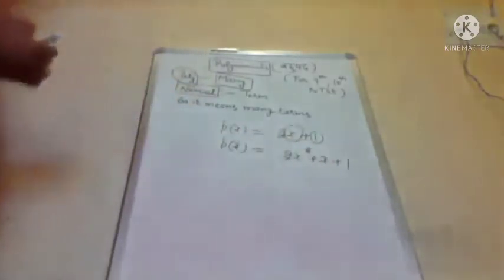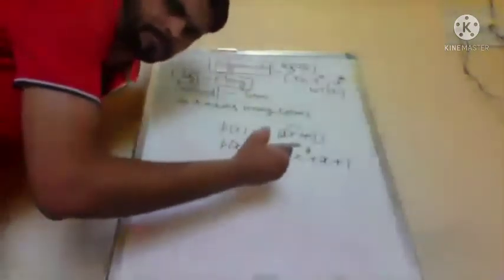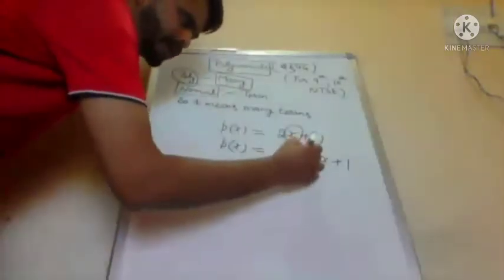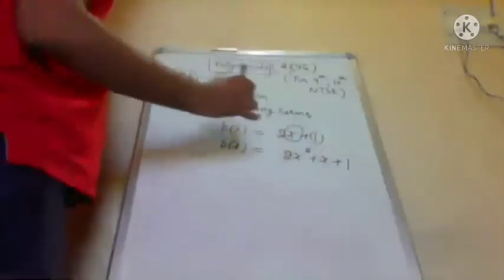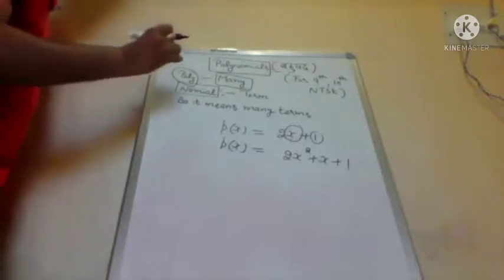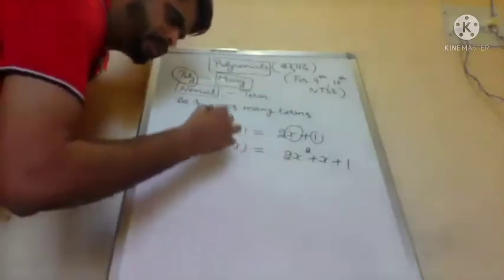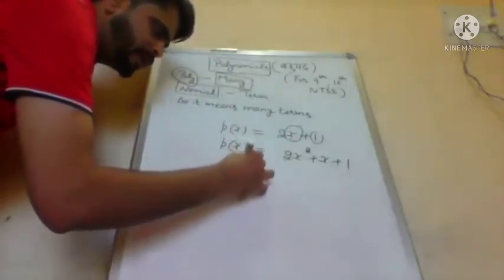Next, uske baad aata hai quadratic polynomial. Jahan x ki highest power (degree) two hoti hai, use hum quadratic polynomial bolenge. Aur is baar ke syllabus mein sirf linear polynomial aur quadratic polynomial hai.